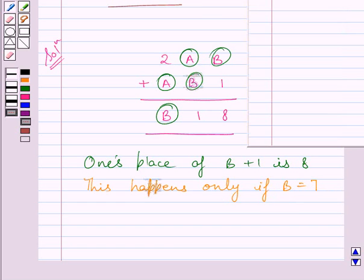Now if we substitute 7 for letter B in this given puzzle, then we get 2A7 plus A71 gives 718.